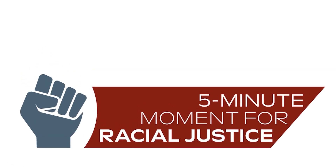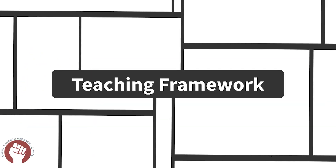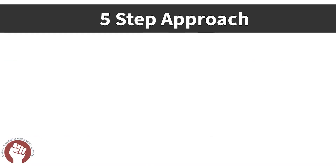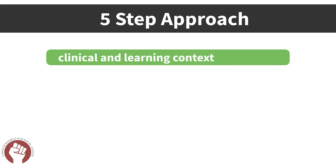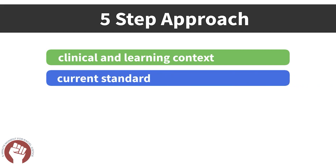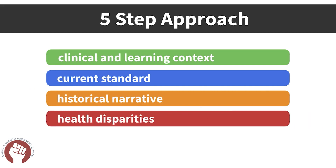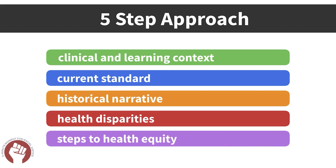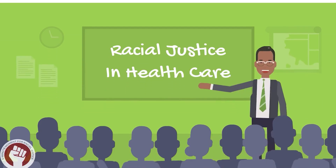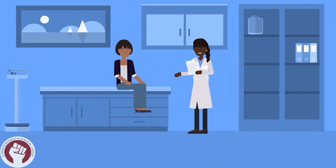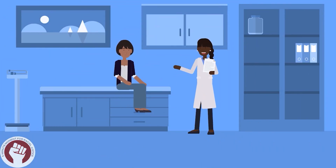The 5-Minute Moment for Racial Justice is a teaching framework to promote health equity and racial justice in medical education. The framework relies on a five-step approach that discusses the clinical and learning context, the current standard of a medical diagnostic or treatment, the historical roots and bias of that standard, contributions to health disparities, and steps to take to promote health equity. This framework offers educators a structured way to talk about this topic in a concise manner across commonly encountered clinical scenarios.